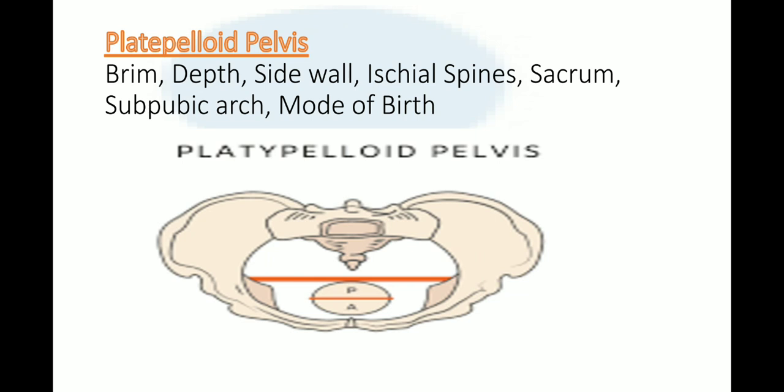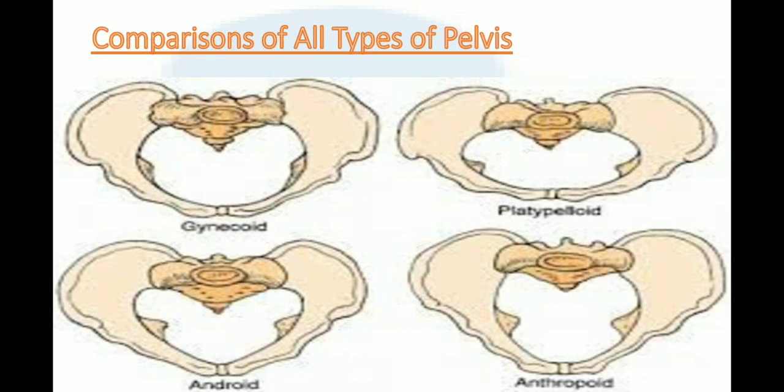These are the four types of female pelvis. The same detail can be read from the textbook by Mariam Ibrahim, page number 56. If you keep that table in front of you while watching this video, you will have a better understanding.